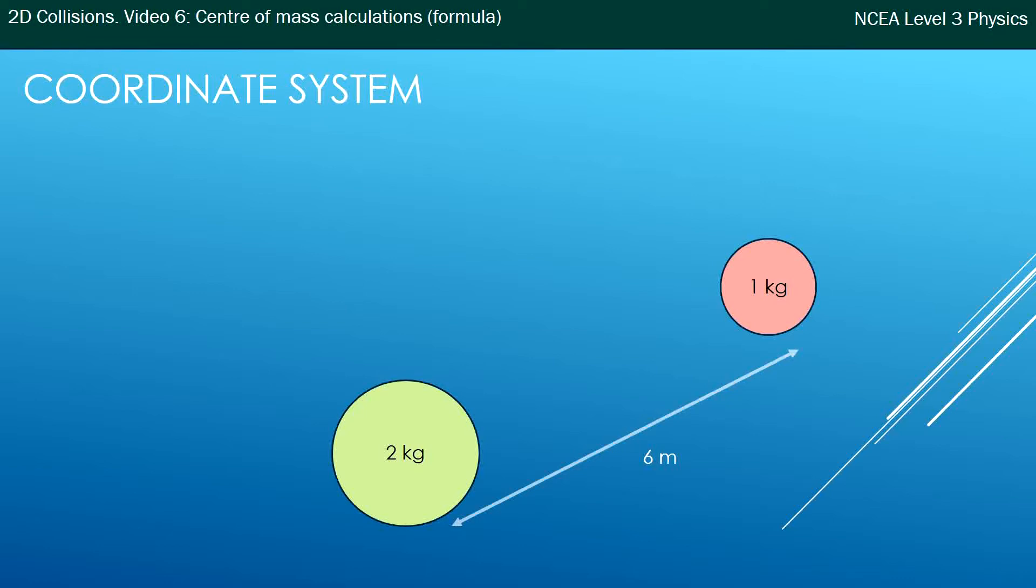They'll certainly pop up in simple harmonic motion waves as well. So a coordinate system is easy: you just choose an origin which is what you want to call the zero mark and then a positive direction. So in this case I'm calling the origin at the 2 kg ball, that's just where I want to start my measurements from and the positive direction is towards the 1 kg ball. So I like to draw that on my diagram so I don't get confused.